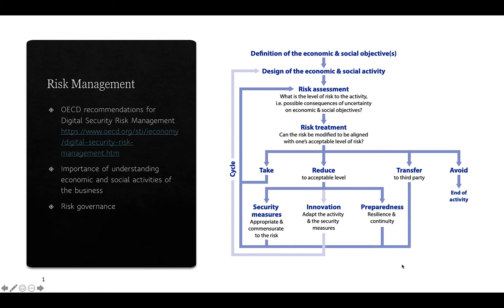This is an example of a risk management process outlined by an organization called the OECD. It's part of a policy they have published that all governments should help their companies and organizations within their nations to implement. In this risk management process, it starts off with risk assessment — the idea being that you determine the level of risk of every activity you undertake and then decide how you're going to go about treating it.